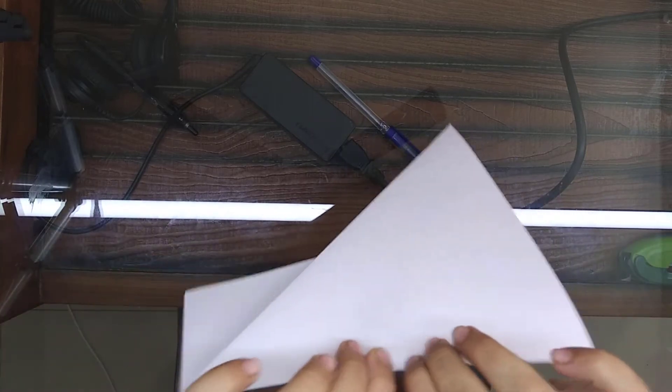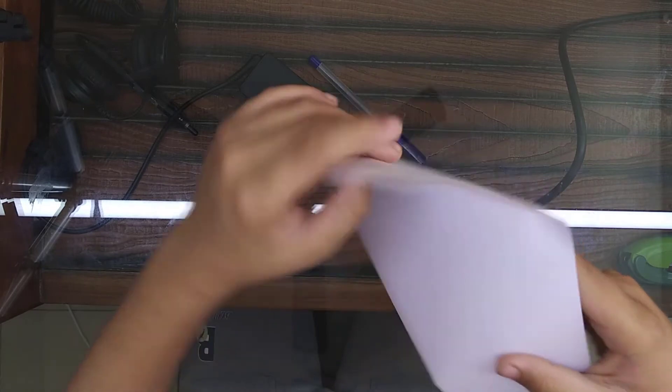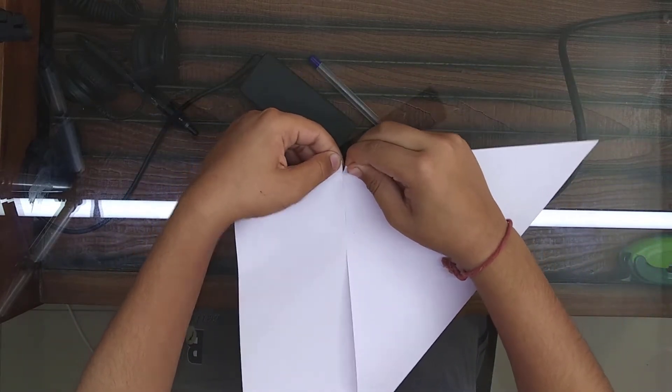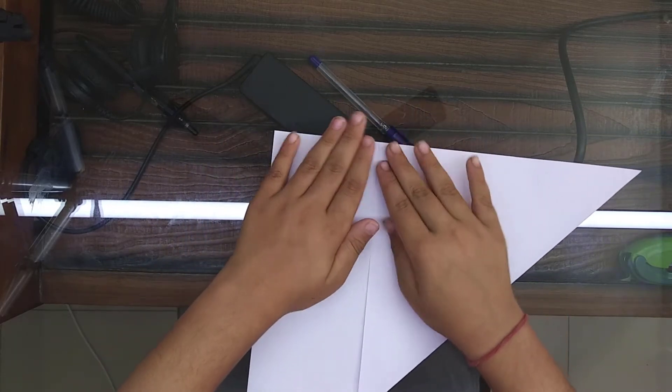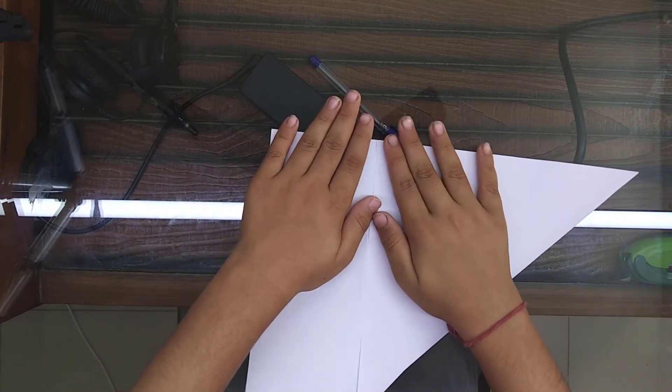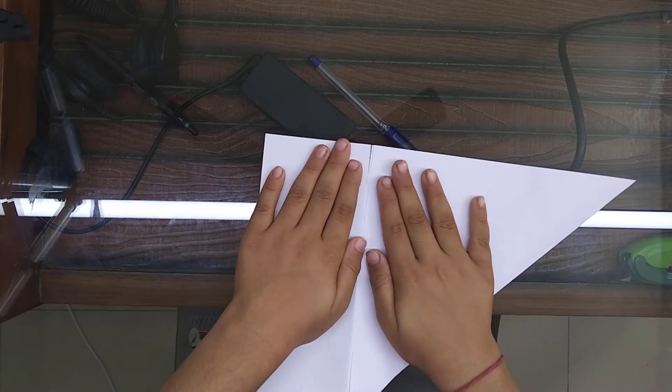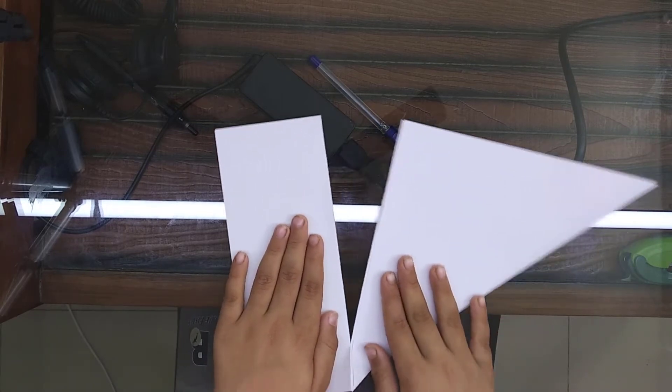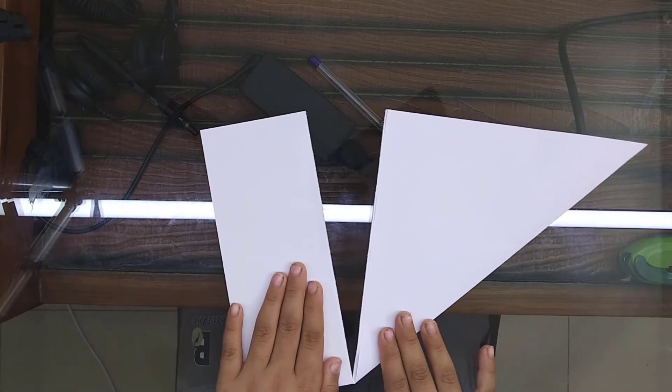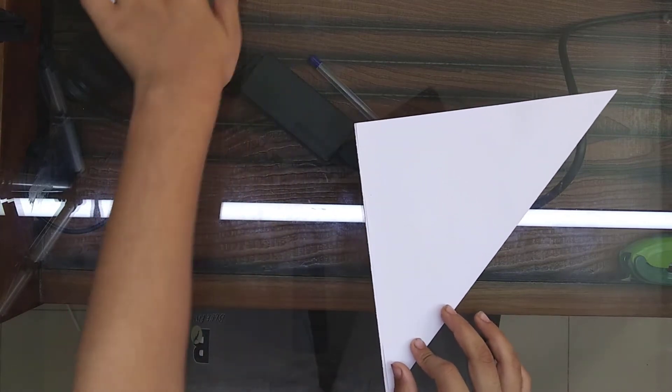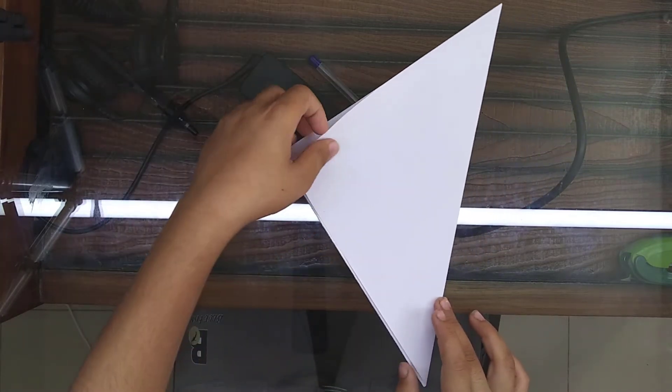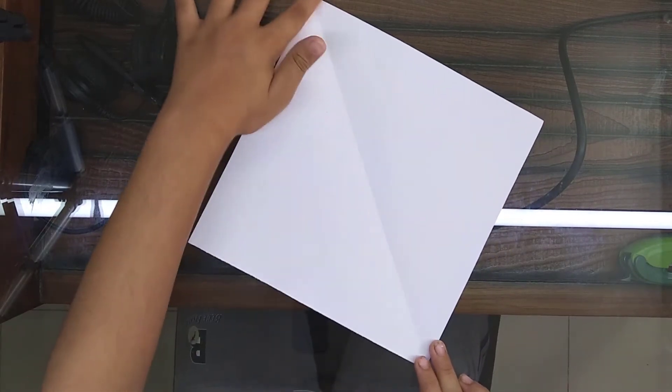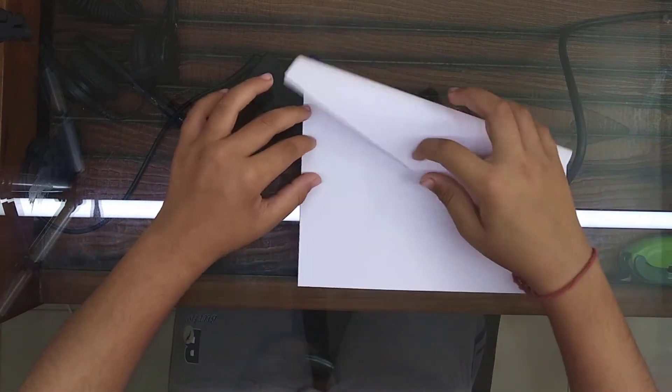If you're ready, then take this paper and tear it like this, or if you want you can cut it with scissors. Done. Now keep this part away. And now you have this crease in between. That doesn't matter because then you need to make another crease like this.